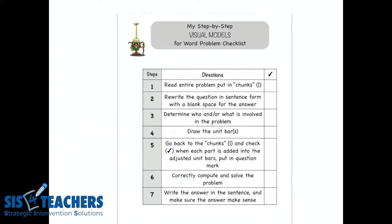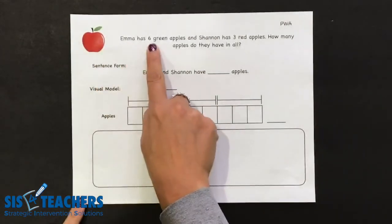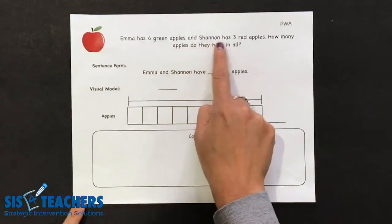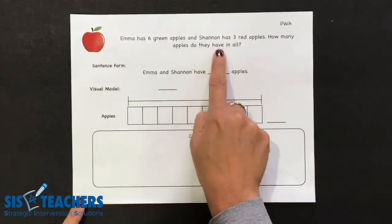Our first step is to read the entire problem and put the problem in chunks. I'm going to read it entirely first, then go back and listen for any new mathematical information. Let's read this question about apples. Emma has six green apples and Shannon has three red apples. How many apples do they have in all?